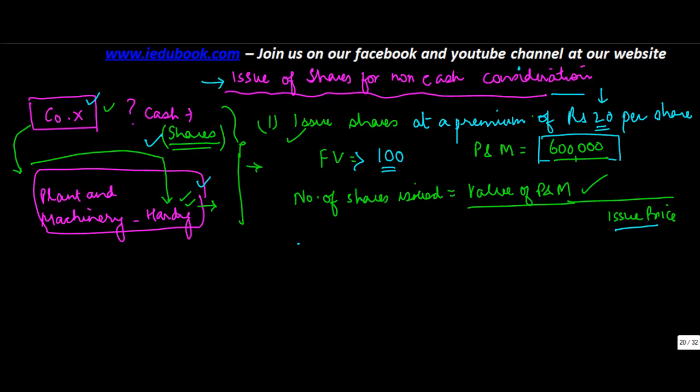So again, the value of the shares is how much? 600,000. Issue price is how much? 100, which is the face value, plus the premium of 20. Or you just simply write this as 600,000 upon 120. This gives you 5,000 shares.